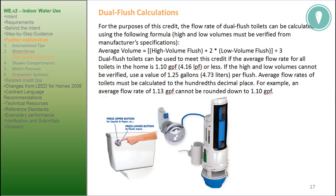For the purposes of this credit, the flow rate of dual flush toilets can be calculated using the following formula — high and low volumes must be verified from manufacturer specifications: Average volume = (high volume flush + 2 × low volume flush) ÷ 3. Dual flush toilets can be used to meet this credit if the average flow rate for all toilets in the home is 1.10 gpf or 4.16 lpf or less. If the high and low volumes cannot be verified, use a value of 1.25 gallons or 4.73 liters per flush. Average flow rates of toilets must be calculated to the hundredths decimal place — for example, an average flow rate of 1.13 gpf cannot be rounded down to 1.10 gpf.